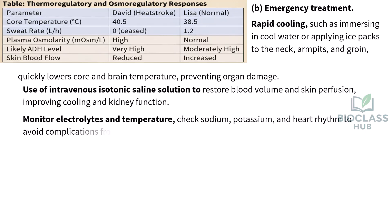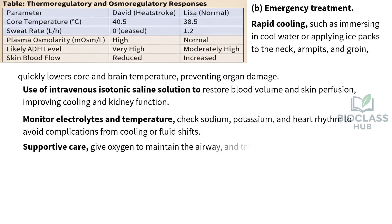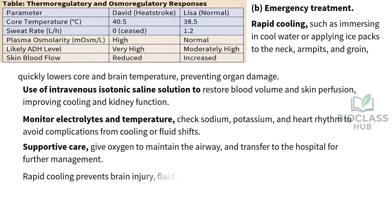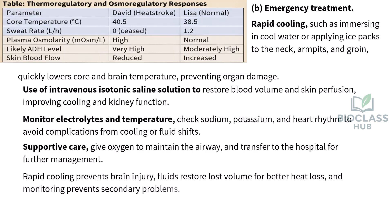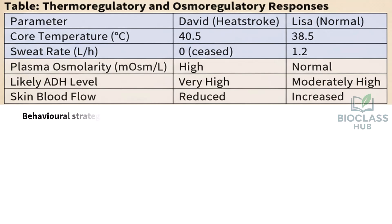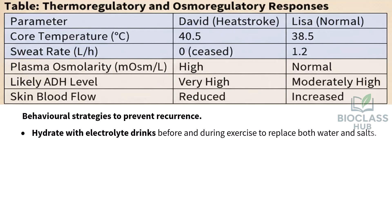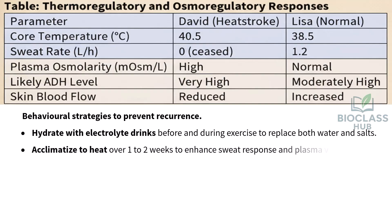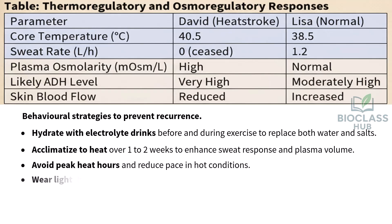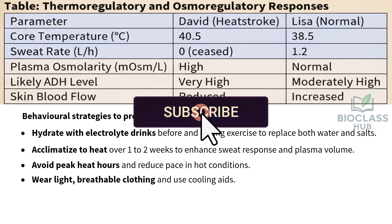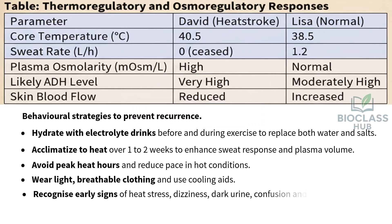Part B. Monitor heart rhythm to avoid complications from cooling or fluid shifts. Give oxygen to maintain the airway and transfer to hospital for further management. Rapid cooling prevents brain injury. In hot conditions, wear light breathable clothing and use cooling aids. Recognize early signs of heat stress — dizziness, dark urine, confusion — and stop to cool down.